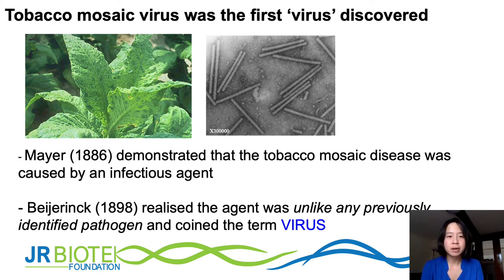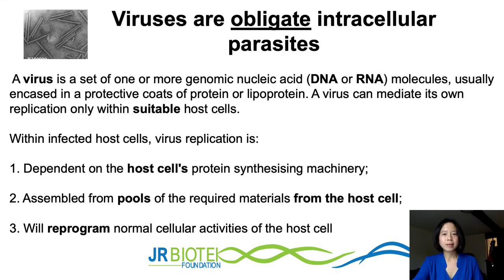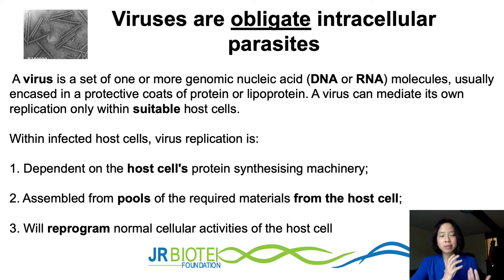However, a plant virus can more often than not infect multiple host plants, not just one. Viruses are obligate intracellular parasites and come in the form of genomic nucleic acid — either DNA or RNA molecules. Usually they are encased in a protective coat of virus coat protein, and a virus can only replicate when inside a suitable host cell.